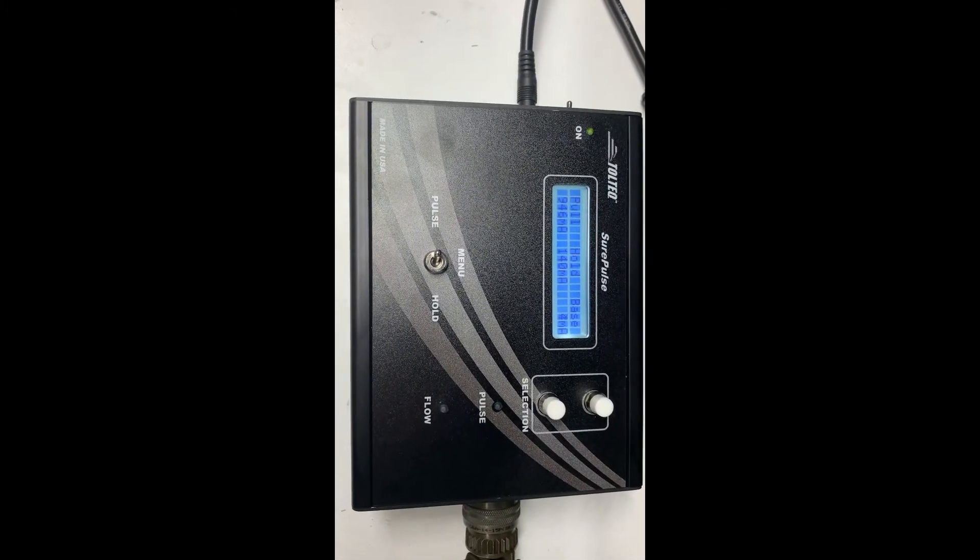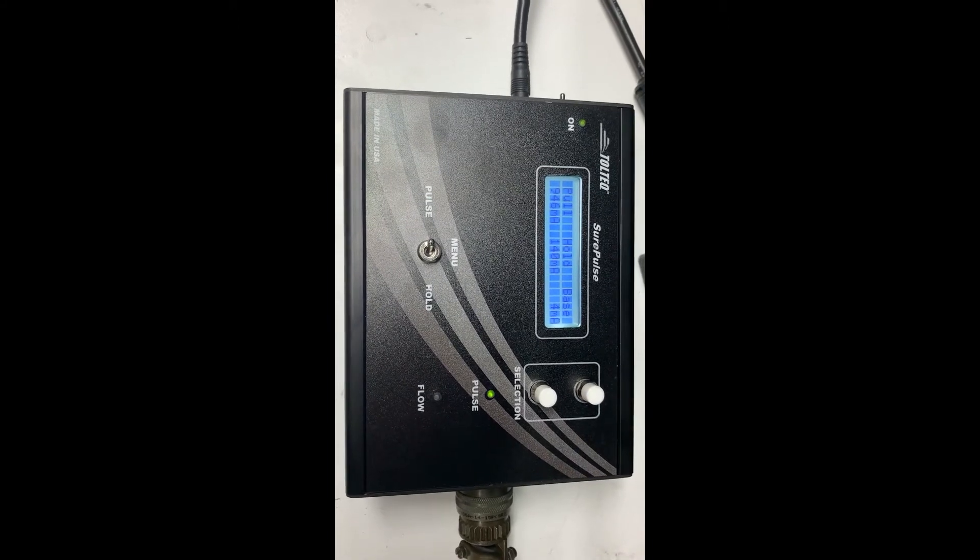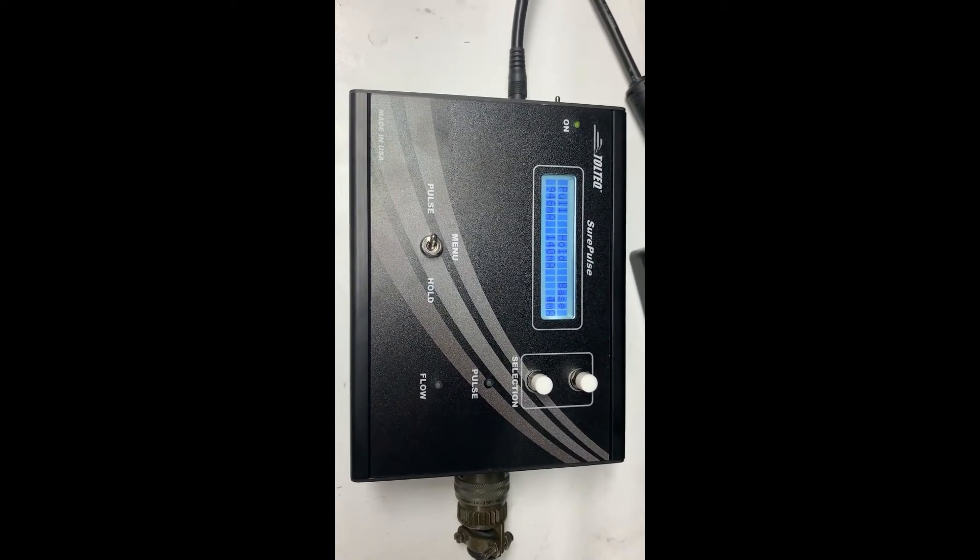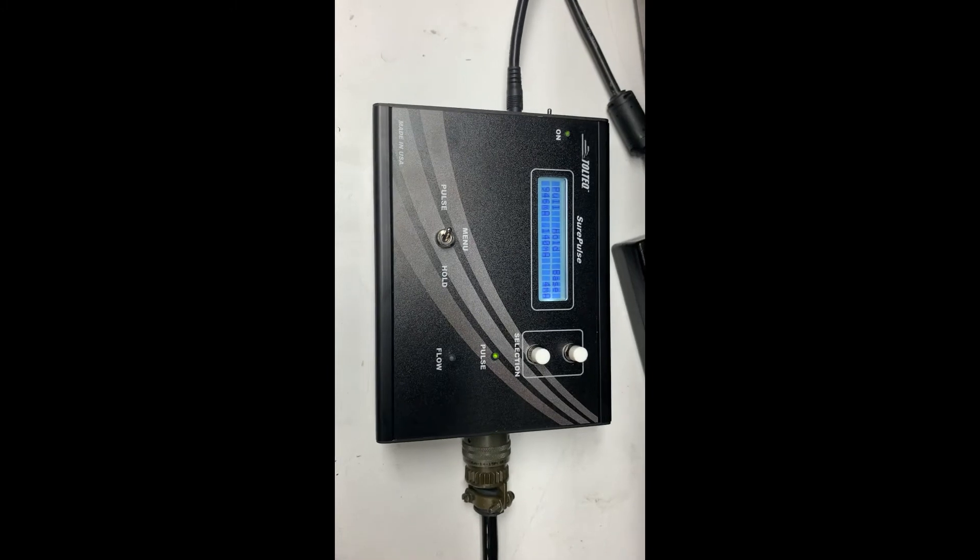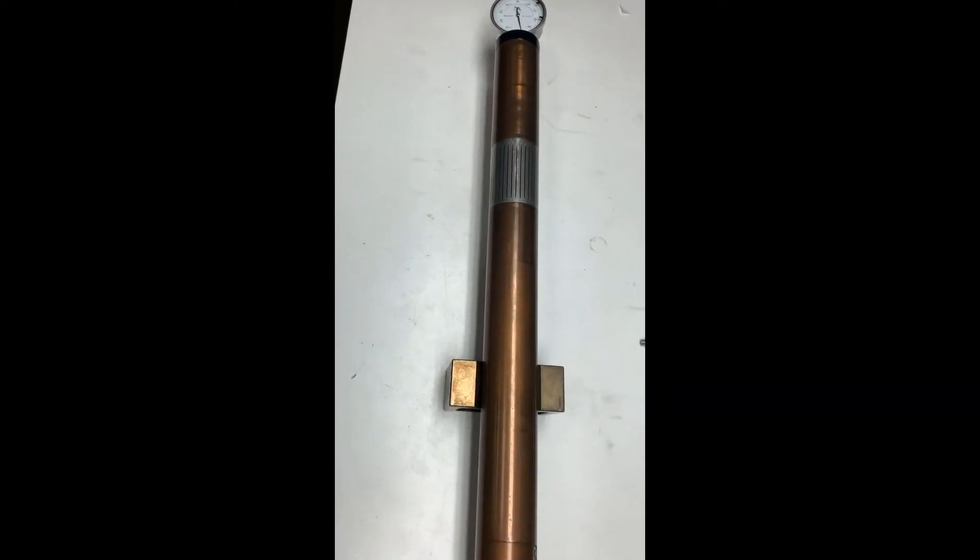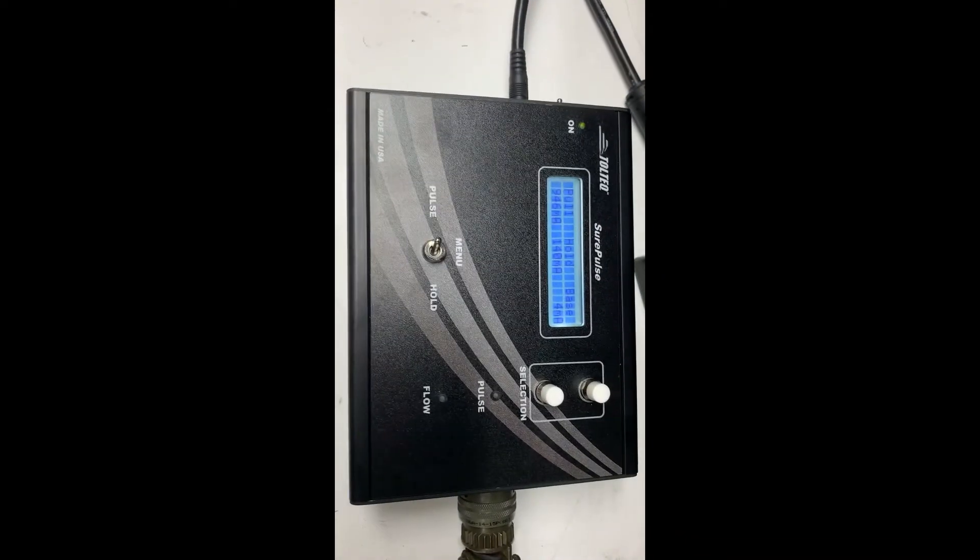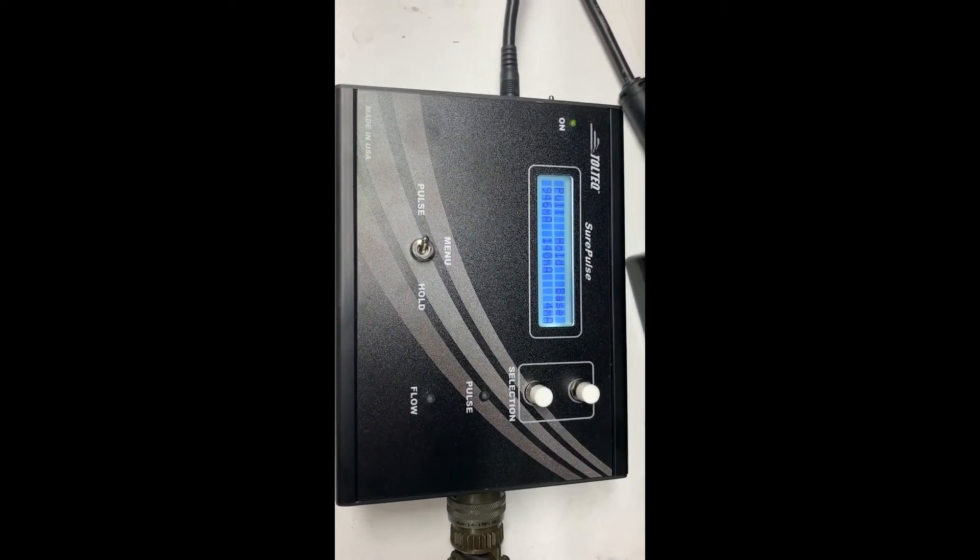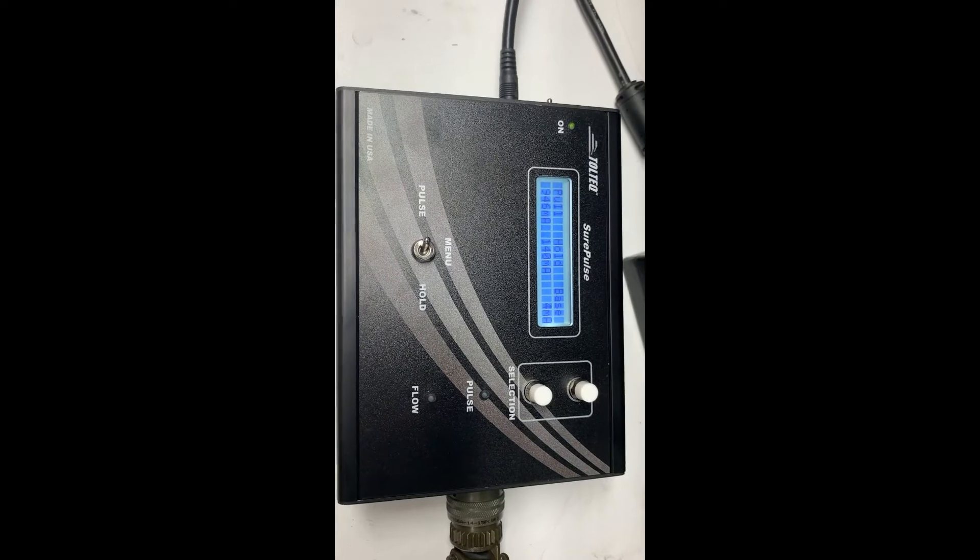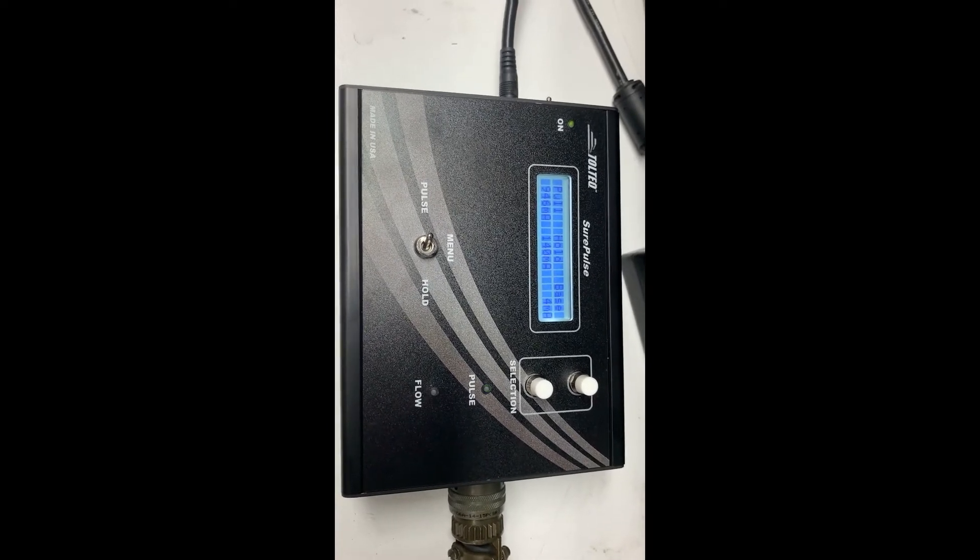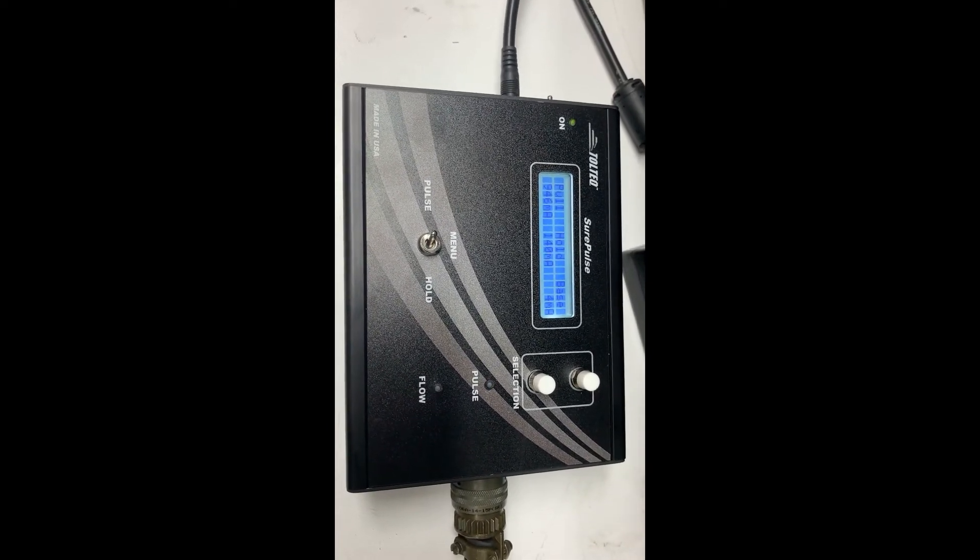So for this pulser the pull current is reading 946. This is how much current is required to move the solenoid. The acceptable range for a retrievable pulser would be 600 to 1000 on the pull current. If it's over 1000 that may indicate that we need to do maintenance on this tool.